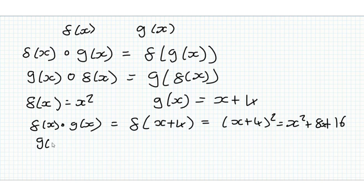Now g of x composed of f of x is equal to g of x squared. And that is equal to, you see g of x takes x and adds 4 to it, so that's x squared plus 4. So you can see that f of x composed of g of x is not equal to g of x composed of f of x.